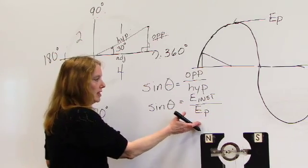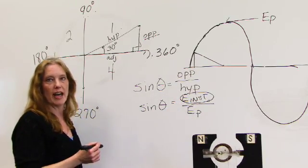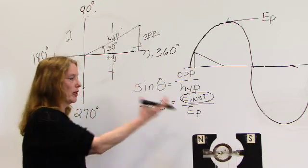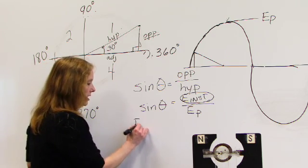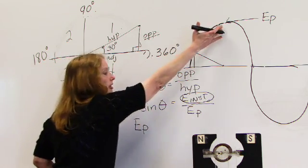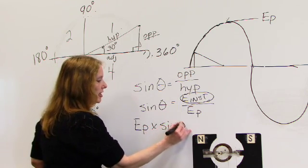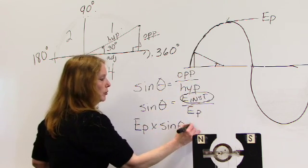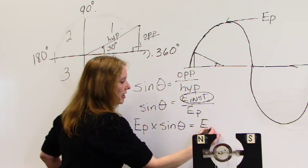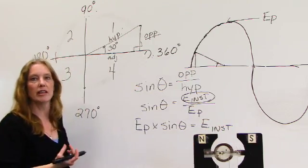So when we get this formula, we actually want to figure out what is our instantaneous voltage at this point. So by transposing this particular formula, we're able to come up with E peak or peak voltage times our sine of theta or the angle that we're traveling at, is equal to our instantaneous voltage at that particular point in time within the cycle.